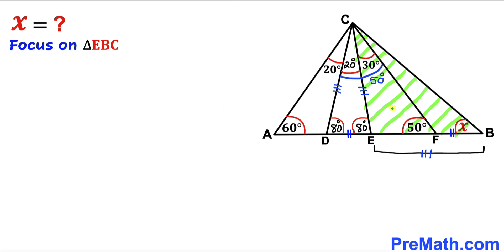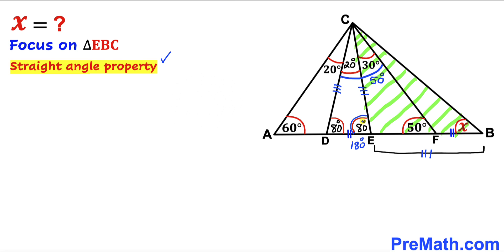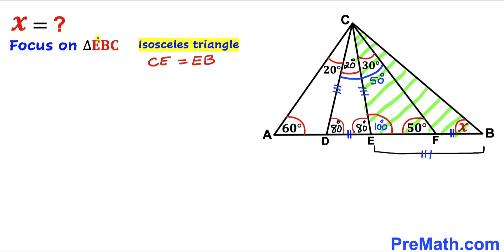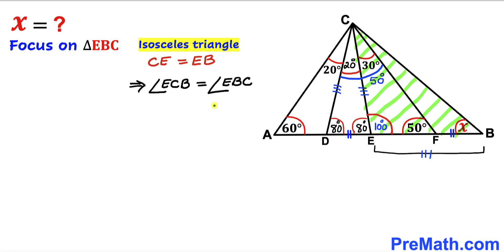Now let's focus on triangle EBC. Applying the straight angle property: the full angle on the line is 180 degrees, and we know 80 degrees is already accounted for, so the remaining angle is 100 degrees. We also observe that triangle EBC is isosceles since side CE is congruent to side EB. Therefore angle ECB equals angle EBC.